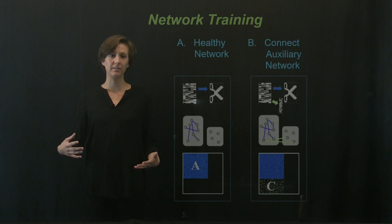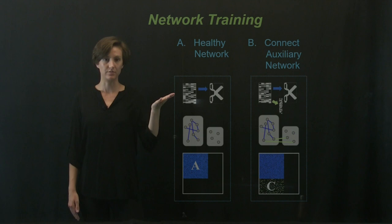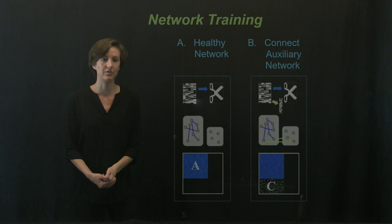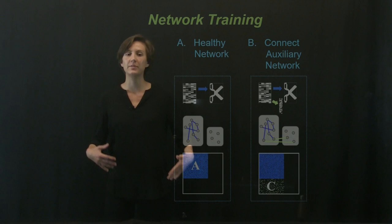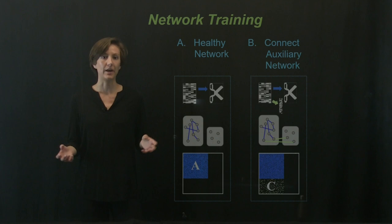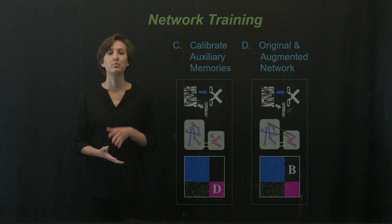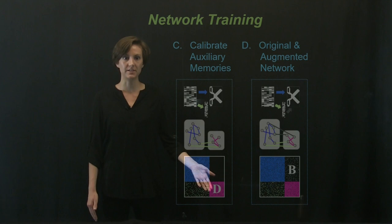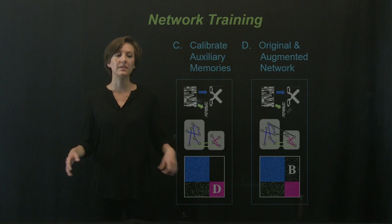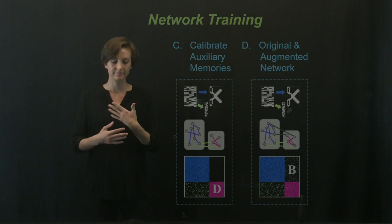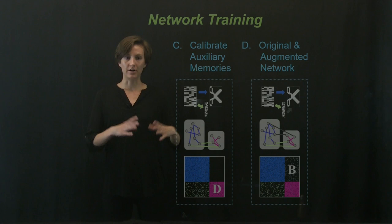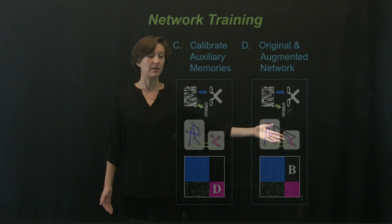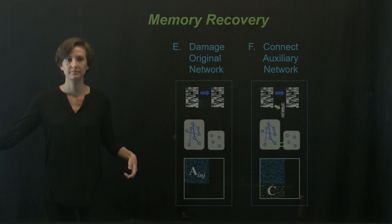Here's what we did in a little bit more detail. We started out with a healthy network, which, when we presented it with noisy stimulus, it would converge to a stored pattern. We next connected the auxiliary network. These connections are sparse and random in order to emulate a brain-machine interface, which would connect very sparsely with a biological network. Next, we calibrated the auxiliary memories by stimulating the network with the original memory patterns, and seeing what corresponding memories the auxiliary network generated. We then took all these memories, generated the auxiliary connectivity matrix, and stored that in our larger matrix. Lastly, we connected the auxiliary network back to the original network.